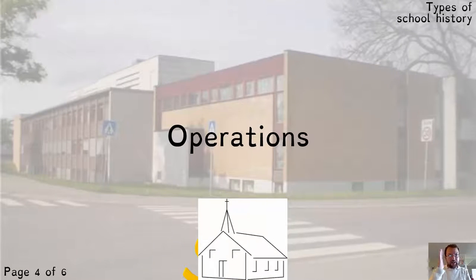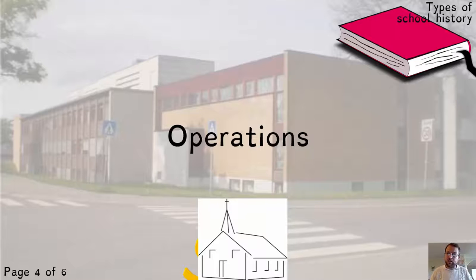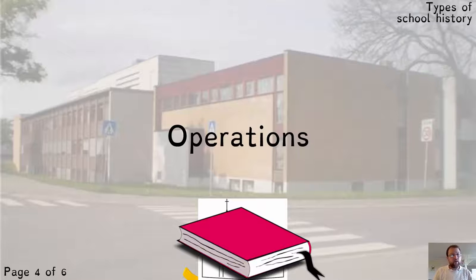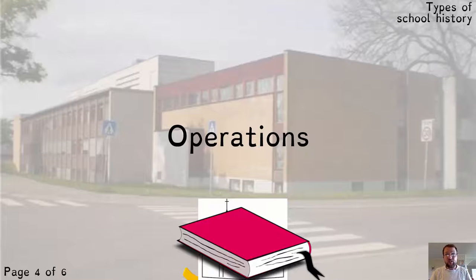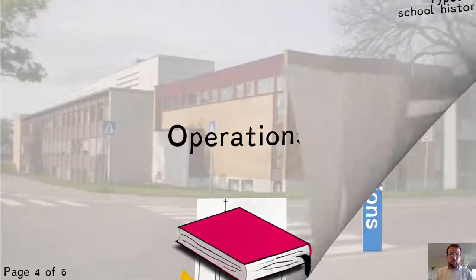Operations refer to decisions about how schools actually work. We can observe these, for example, when schools began to be paid for by the state, or how they relate to other institutions like the church. Operations also include decisions about which subjects are introduced — religion being a controversial one, but also geography and history, which had enormous influence on early schooling. There's currently a discussion about whether mental health should be a school subject. These decisions are made within schools but most often in governments, parliaments, and courts.